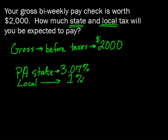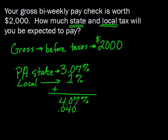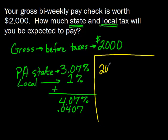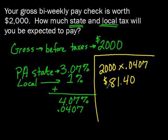So we're taking out 3.07% and 1%. We add those together to get a total deduction of 4.07%, which is the same as 0.0407 as a decimal. I like to use decimals because it makes calculations easier on the calculator. Our last step is simply multiplication: we take $2,000 and multiply it by 0.0407. This gives us $81.40. We're working with money, so make sure you have two decimal places. So $81.40 will be taken out for state and local taxes together.